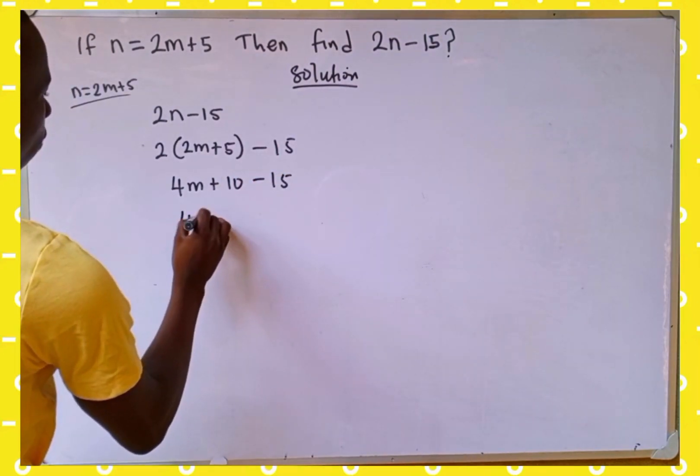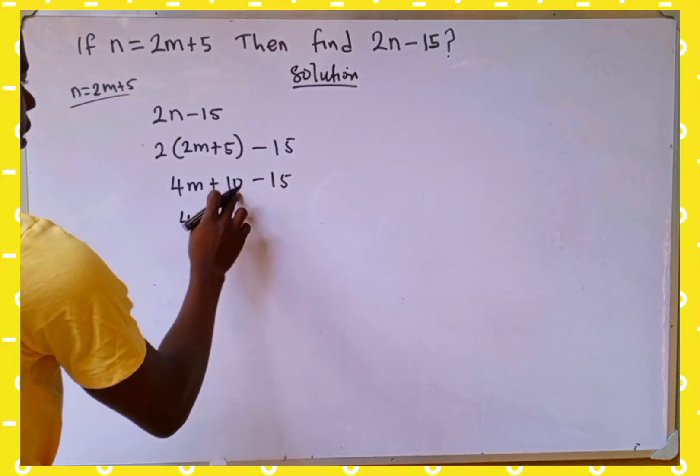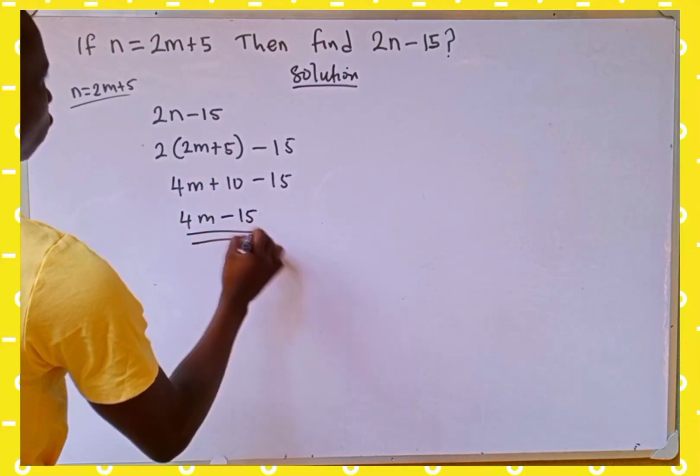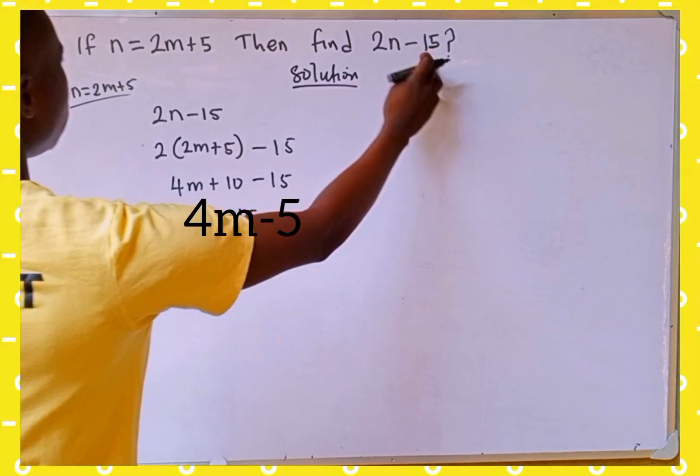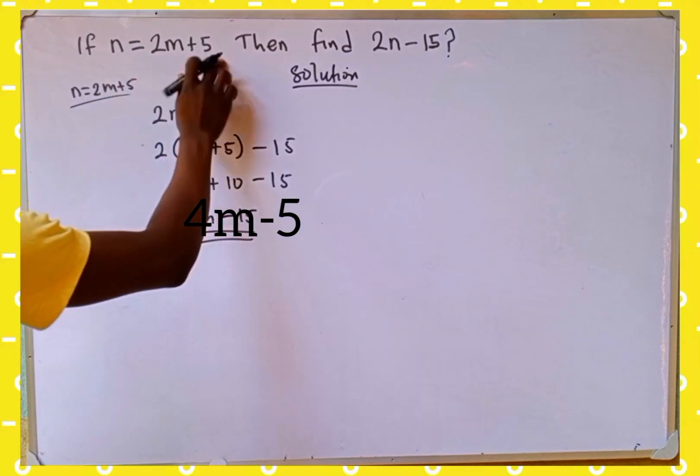So 4m plus 10 minus 15 gives us 4m minus 5. So this is the value of 2n minus 15 when n is equal to 2m plus 5.